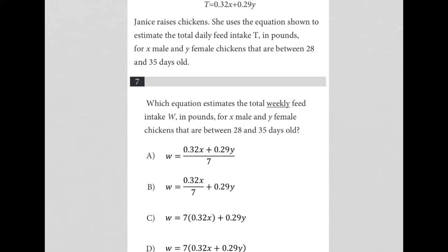This question has the equation T equals 0.32X plus 0.29Y. We read here that T represents the total daily feed intake in pounds. X is for male chickens, Y is for female chickens. Both chickens are between the age of 28 and 35 days old.